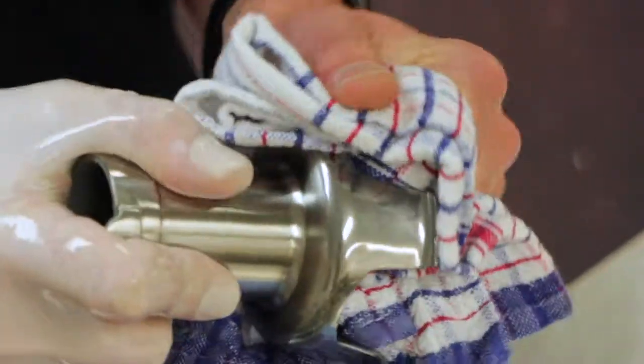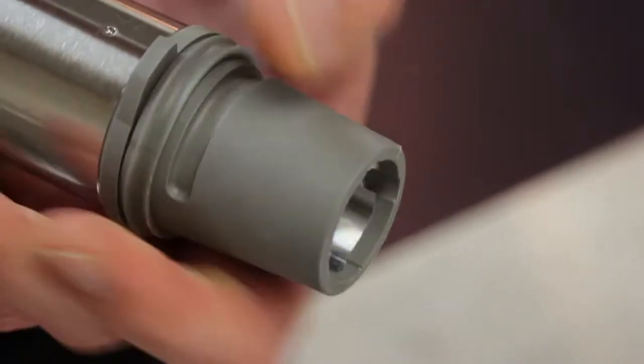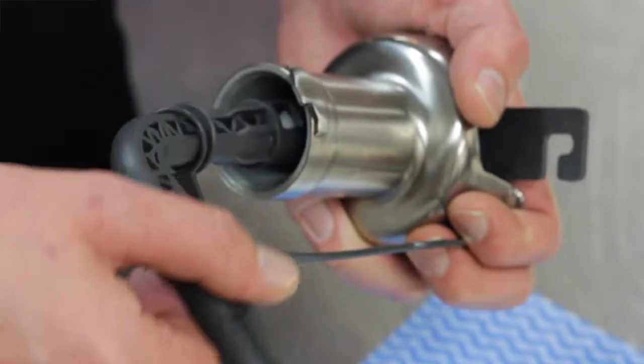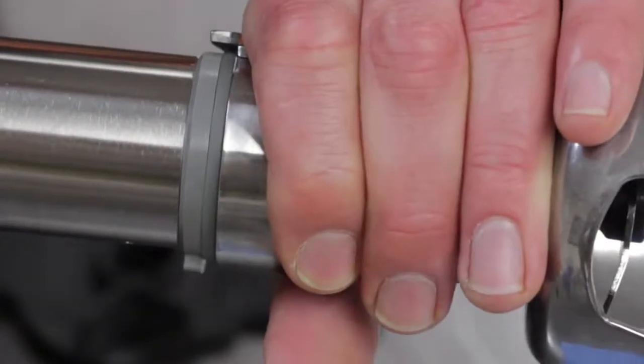Once removed from the solution, dry all parts thoroughly. Replace the foot seal and re-tighten the blade to the bell assembly using the same process in reverse. Re-attach the bell to the shaft by twisting in an anti-clockwise motion.